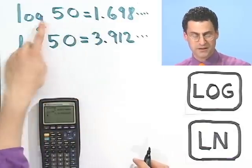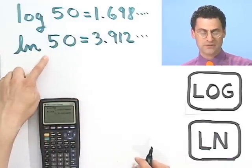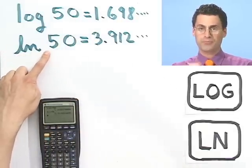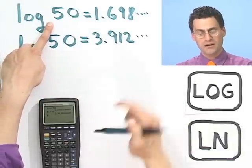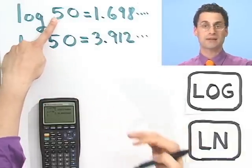So that's sort of neat. You can see these are different numbers because, of course, here, this e is around 3. So I've got to raise 3 to a big power to make it 50, but 10 is so much bigger, the power I have to raise it to is a lot less to make it 50. All right. Try some on your own and you'll see how to use the calculator.